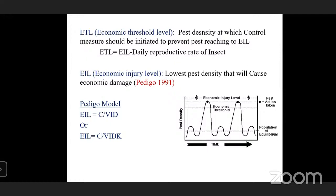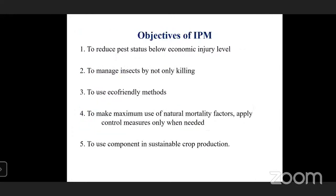Both ETL and EIL were first introduced by Stern et al., and the definitions were refined by Pedigo. The objectives of IPM are to reduce pest status below the economic injury level — not complete elimination — so as to maintain a balanced ecosystem in the crop environment, allowing survival of predators and parasites.